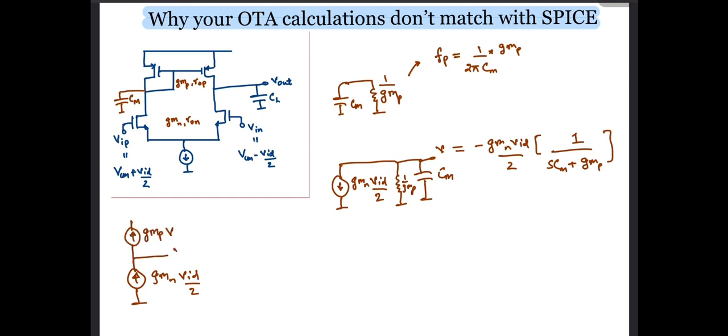Since we wish to find the location of the zero, meaning a frequency at which the output voltage is zero, thus no current should be flowing to the output so that no voltage is generated. Therefore, we equate the magnitude of the PMOS and NMOS currents to get the location of the zero.